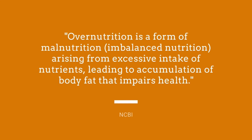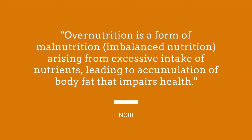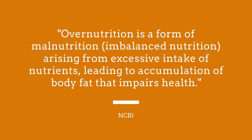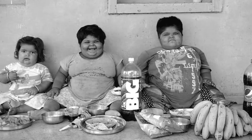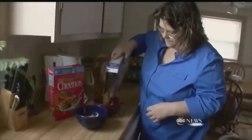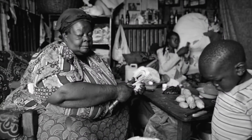As defined by NCBI, overnutrition is a form of malnutrition — imbalanced nutrition arising from excessive intake of nutrients leading to accumulation of body fat that impairs health. In 2014, the WHO estimated that worldwide more than 600 million adults were obese, while 42 million children under the age of 5 were overweight. Obesity is just as severe an issue as undernutrition, and when energy and nutrients in a diet exceed the required amount, it leads to obesity.